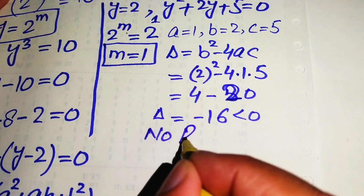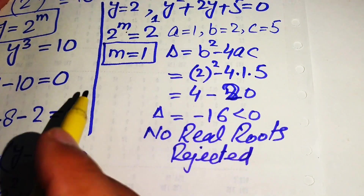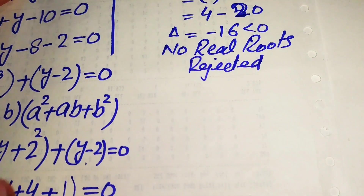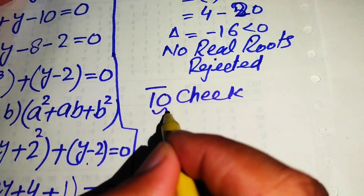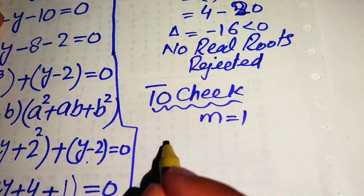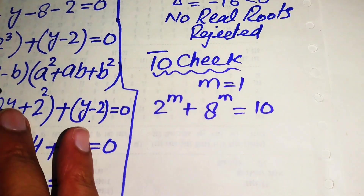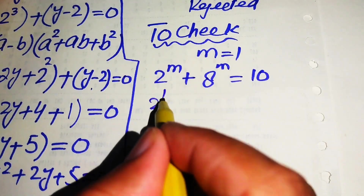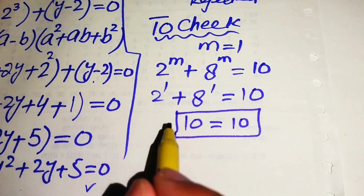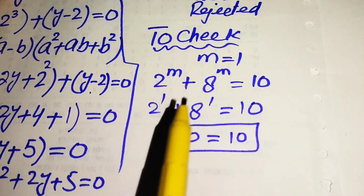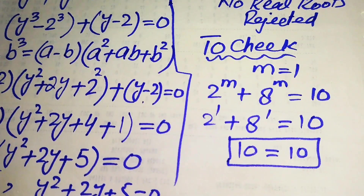We reject the second case as it has no real roots, leaving only m equals 1. We verify this by substituting m equals 1 into the original equation: 2 to the power of 1 plus 8 to the power of 1 equals 2 plus 8 equals 10. This confirms that m equals 1 satisfies the given equation. Therefore m equals 1 is the only real root, and that is the final answer. Thank you so much for watching — please subscribe for more videos.